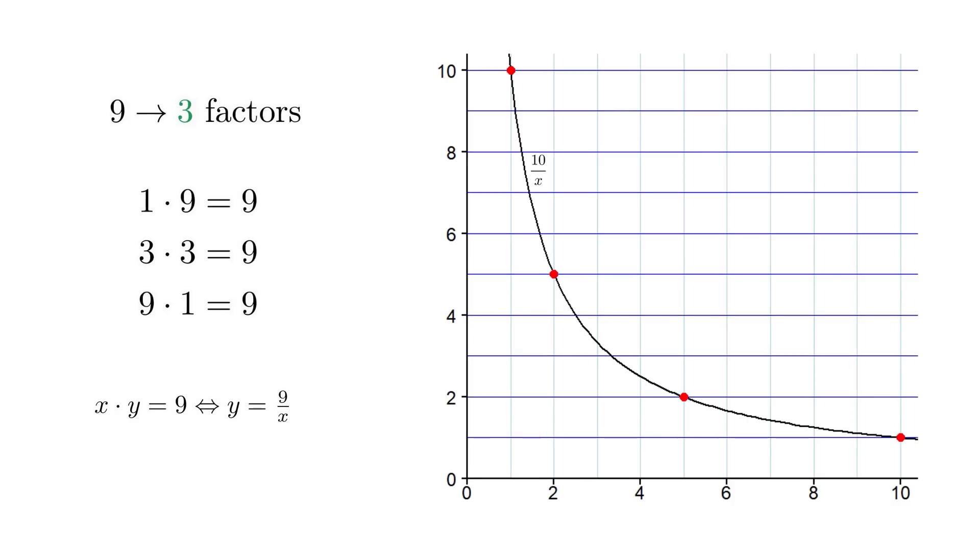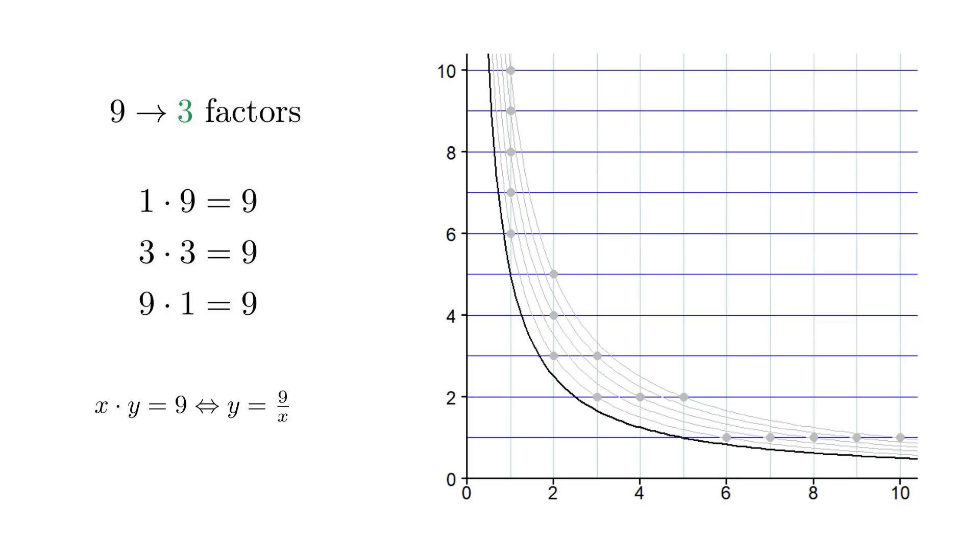If we now continue plotting the hyperbola 9 over x, we see that there are precisely 3 points on its graph of integer coordinates, namely 1,9, 3,3, and 9,1, corresponding to the 3 divisors of 9, namely 1, 3, and 9. For 8 over x, the hyperbola goes through 4 points, corresponding to the 4 factors of 8, 1, 2, 4, and 8 itself. Continuing this procedure, we end up with every single whole numbered point on and below the original curve, corresponding to every factor of every number from 1 to 10.